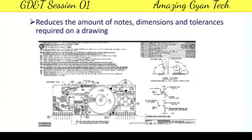The main advantage is manufacturing the part to the perfect size and shape. Another advantage is it reduces the number of notes, dimensions, and tolerances required on a drawing. As you can see in the drawing below, there are many elements assembled with many notes. When we use GD&T, you can reduce the number of notes, which avoids ambiguity — the drawing looks very clear, and the interpreter can understand it without confusion.